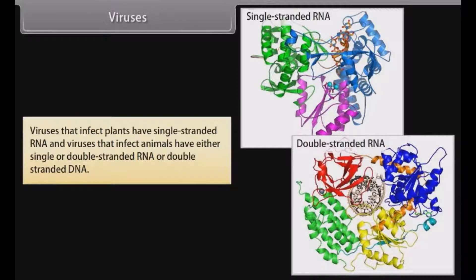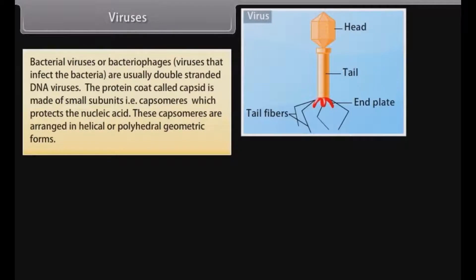Viruses are obligate parasites with genetic material that may be single-stranded RNA or double-stranded DNA. The protein coat called the capsid is made of small subunits called capsomeres, which protect the nucleic acid. These capsomeres are arranged in helical or polyhedral geometric forms.